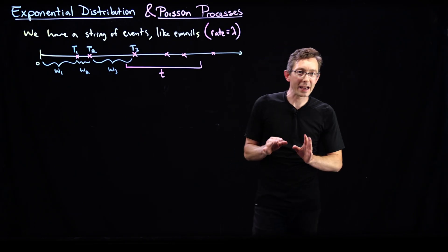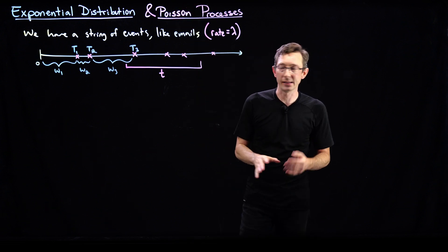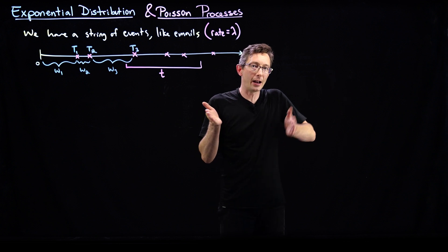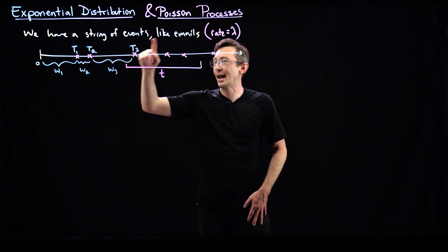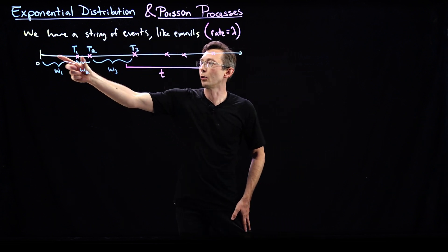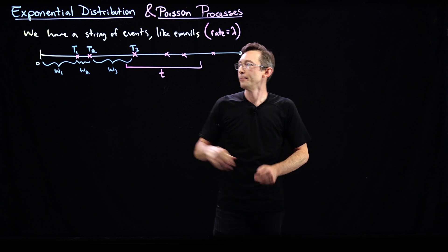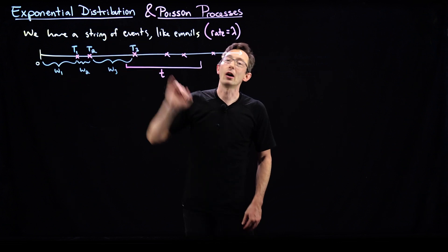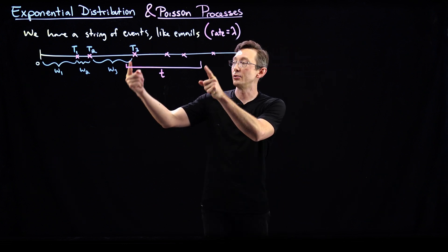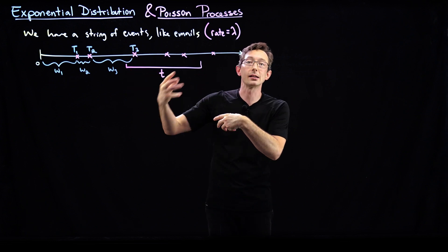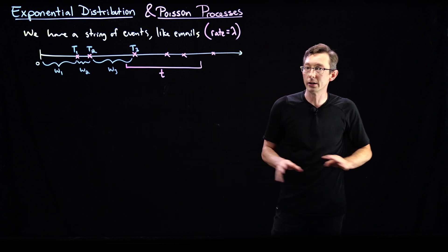Welcome back. Okay, so in the last lectures we introduced the exponential distribution and related it to the Poisson process. Roughly speaking, if you have a string of events that come in at some rate lambda, like emails, and these events happen at times t1, t2, t3, and so on, and there are waiting times or arrival times between each of these events, we know that each of these arrival times or waiting times are exponentially distributed random variables, and the number of events I expect to see in an amount of time t is a Poisson distributed random variable with parameter lambda times t. That's pretty straightforward, really intuitive, made a lot of sense.